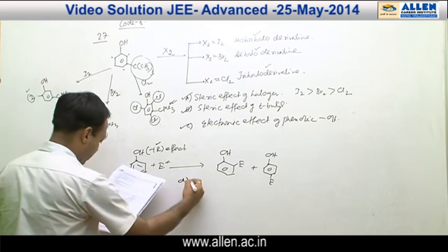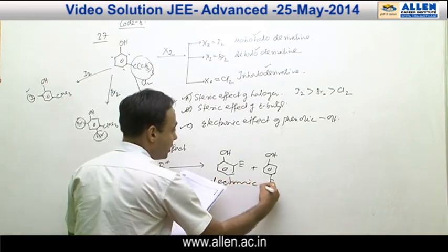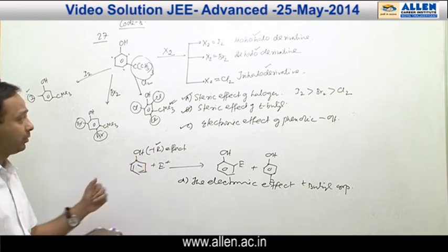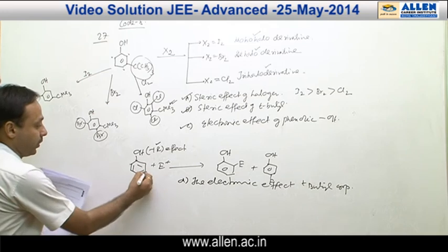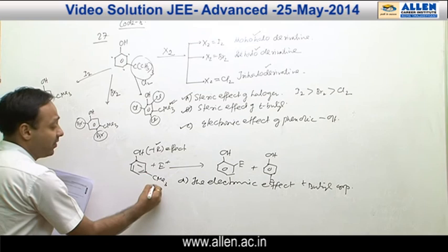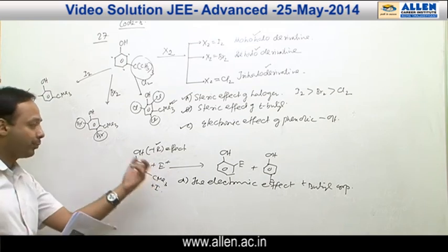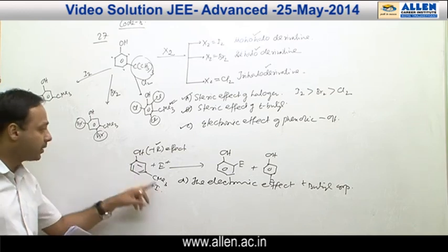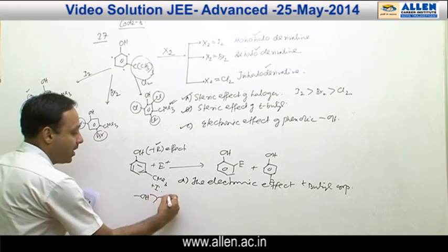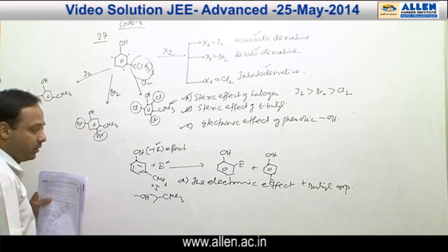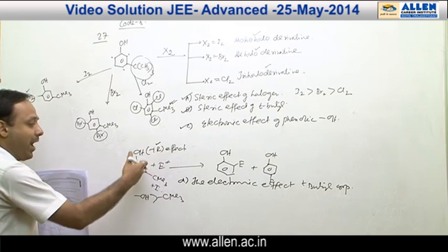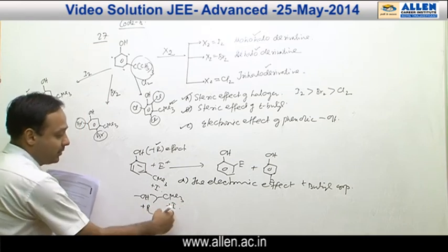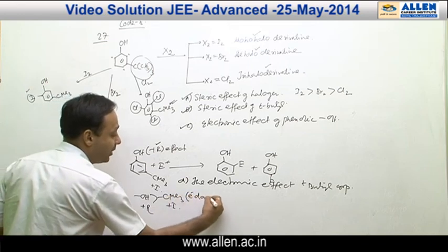Option D, electronic effect of tertiary butyl group. It is wrong because when electrophile is approaching, there are two groups in the ring. One is OH, one is C(CH3)3. C(CH3)3 shows plus R effect. OH shows plus R effect. Electrophile approach, the attacking site of electrophile will be decided by more activating group. And here, the more activating group is OH as compared to C(CH3)3. So electronic effect of OH actually matters, which can direct the electrophile to attack at ortho para positions. And OH is a more activating group because plus R effect is greater than plus I effect of C(CH3)3. This is more electron donating in nature.